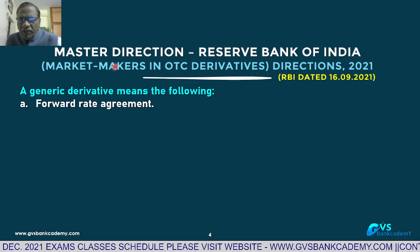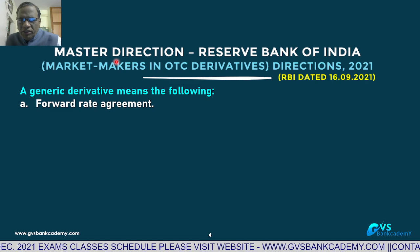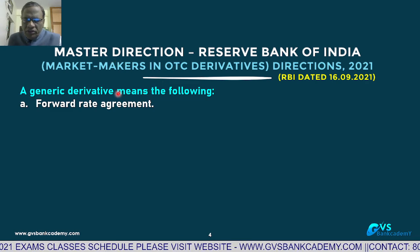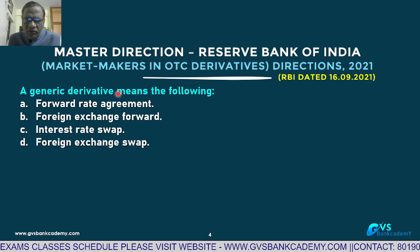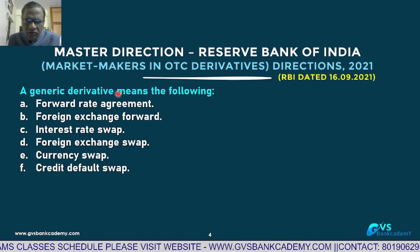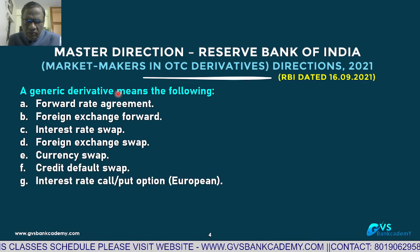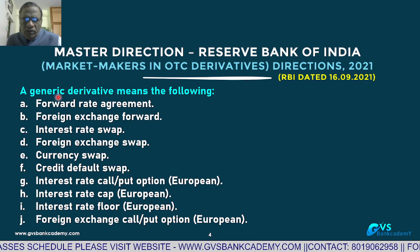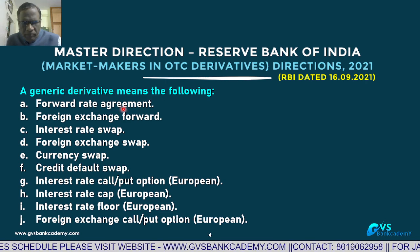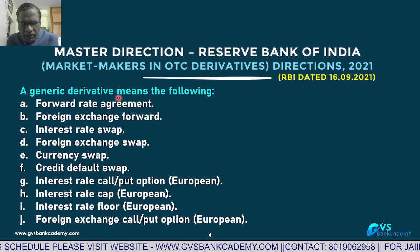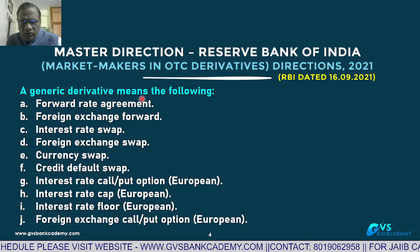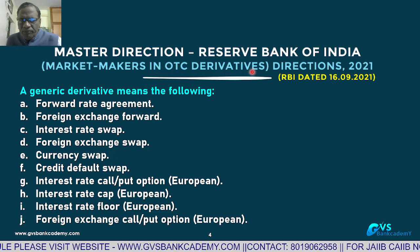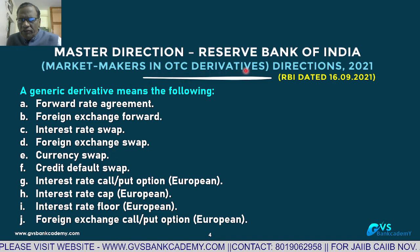This is the Master Direction for OTC derivatives — a single circular that all banks and participants have to follow. A generic derivative covers the following types of OTC (non-exchange traded) derivatives: Forward Rate Agreement, which is an OTC derivative for short-term interest rate risk management.